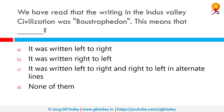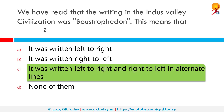We have read that the writing in Indus Valley Civilization was boustrophedon. What does this mean? Correct answer: it means that it was written left to right and right to left in alternate lines.